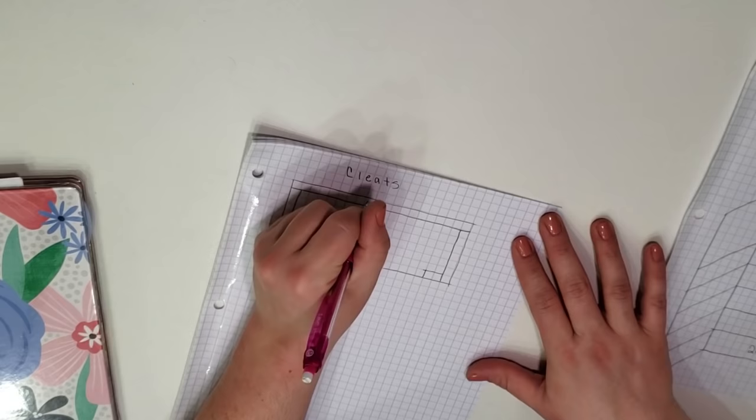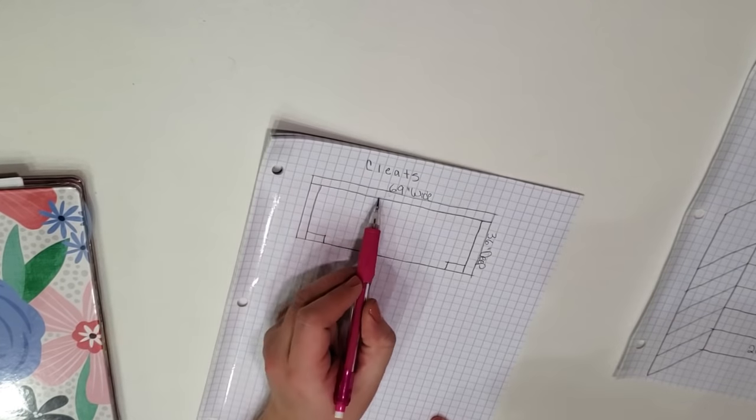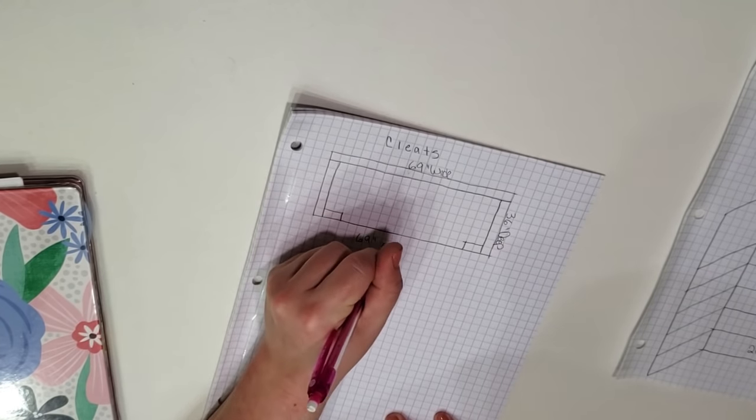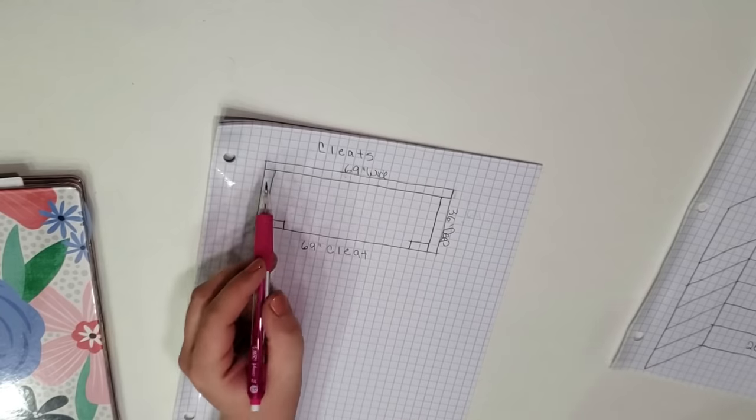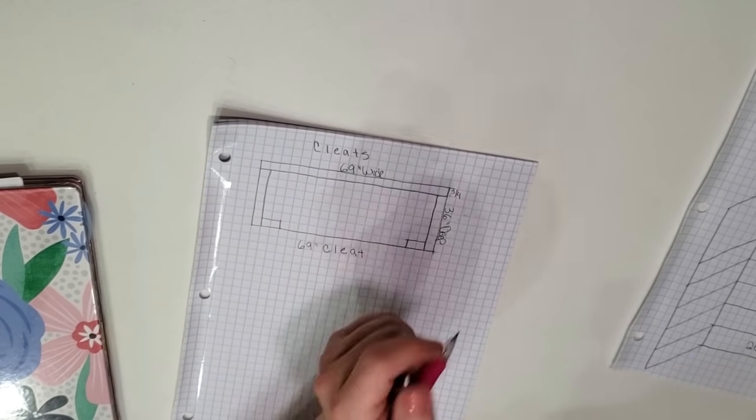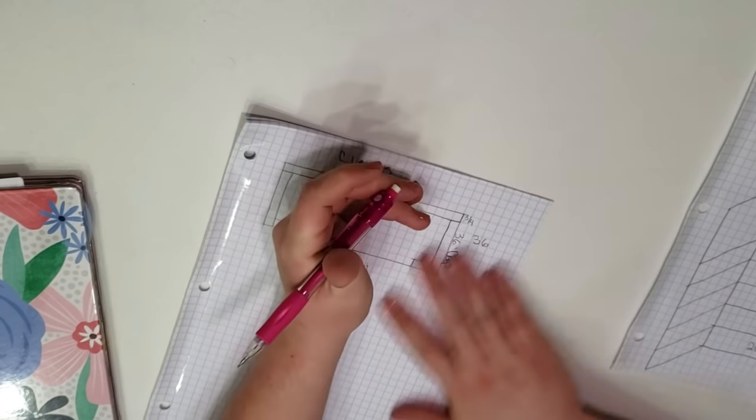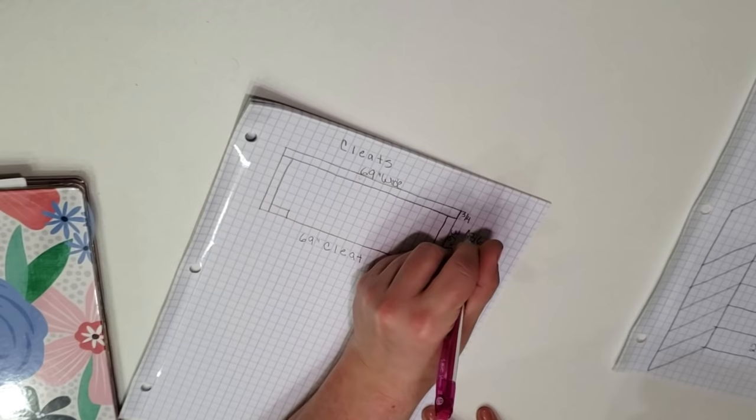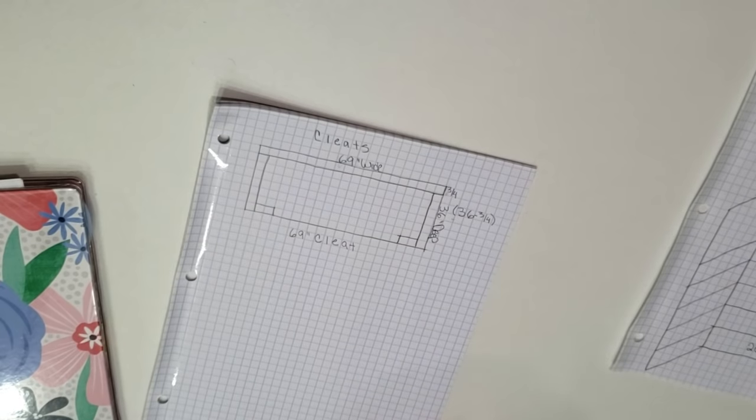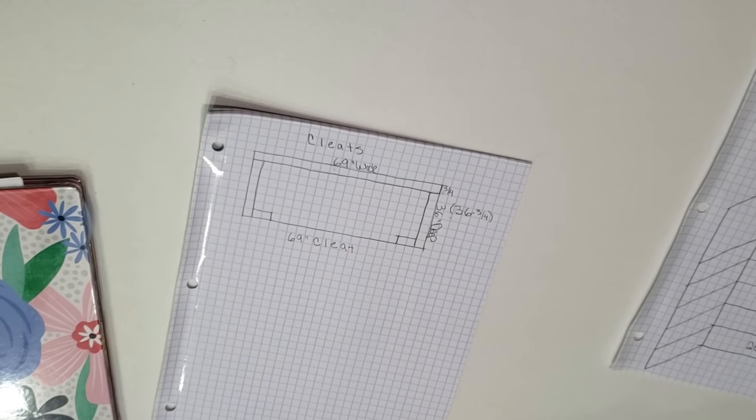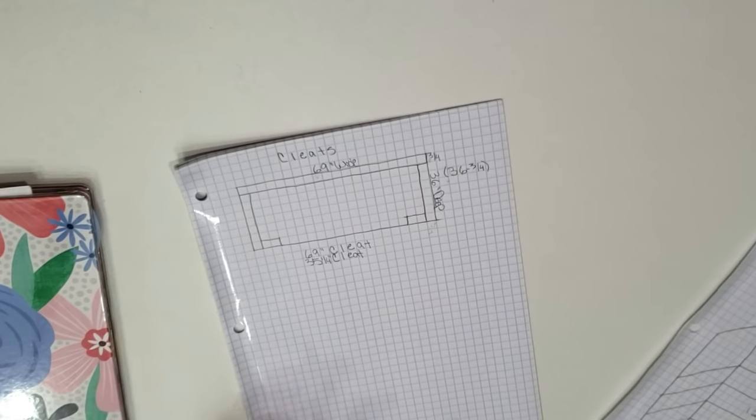I'm using one by twos for the cleats. I know I will need one running along the back wall of the shelf that is 69 inches wide. For the cleats on the side walls they will run the full length of that wall minus the thickness of the cleat on the back wall that they will butt up to. So my wall is 36 inches wide on the sides minus the three quarter of an inch cleat on the back wall making the cleats on my side walls 35 and a quarter inches wide.